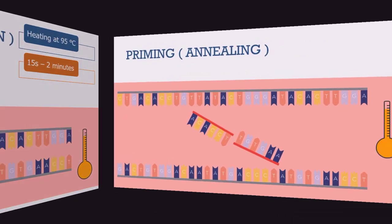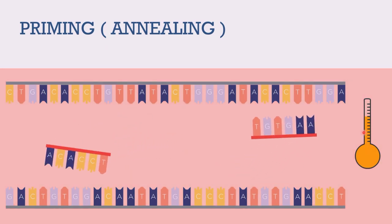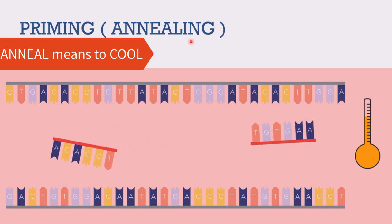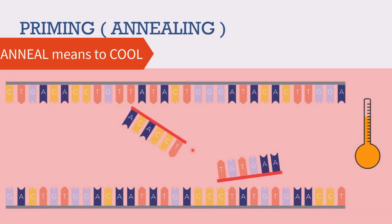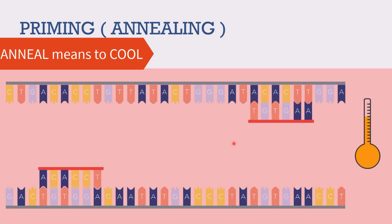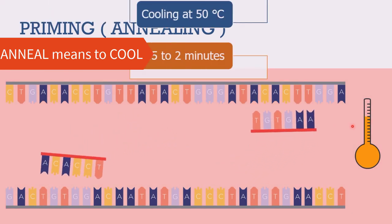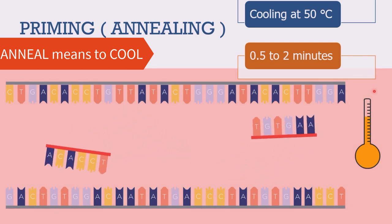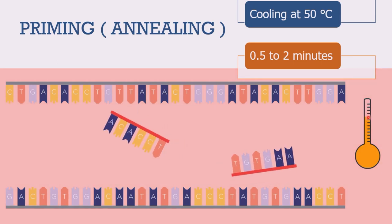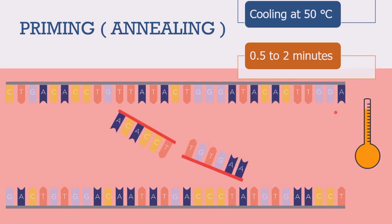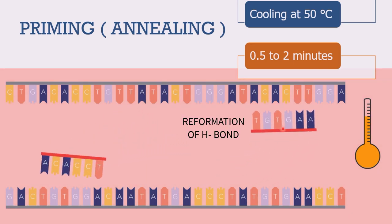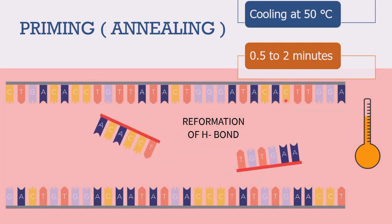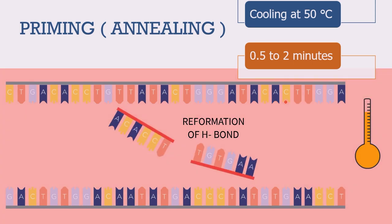Step two is priming or annealing. Annealing is the process in which you heat something — basically a metal — and then allow it to cool slowly. From step one we maintained the temperature at 95 degrees Celsius, and now in this step we lower the temperature to 55 degrees Celsius such that the primers go and bind to the target area on the DNA template. This happens by the process of complementary base pairing. When cooled, the hydrogen bonds get re-established and the primers join with the individual strands, making a site for the action of the polymerase enzyme.